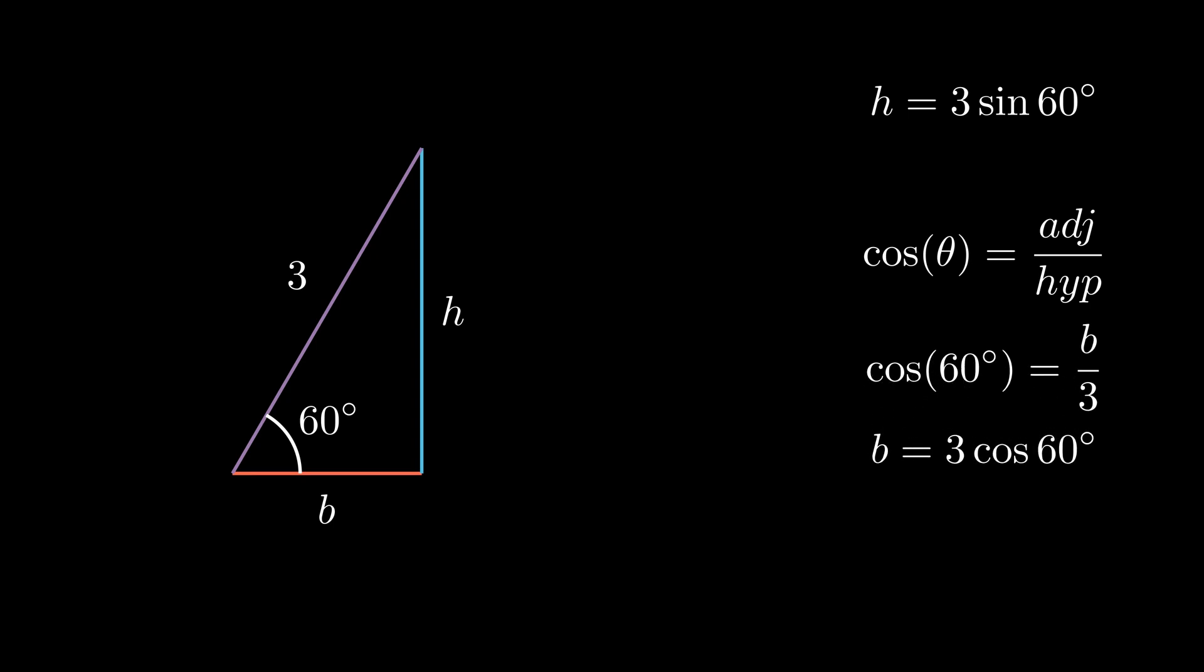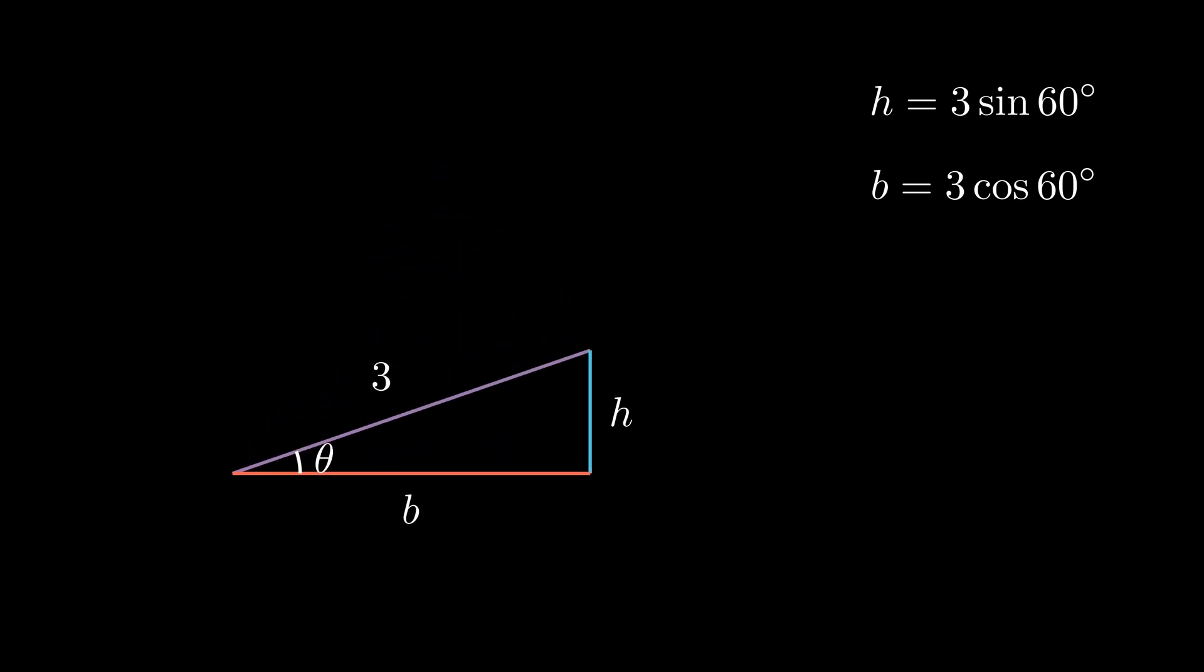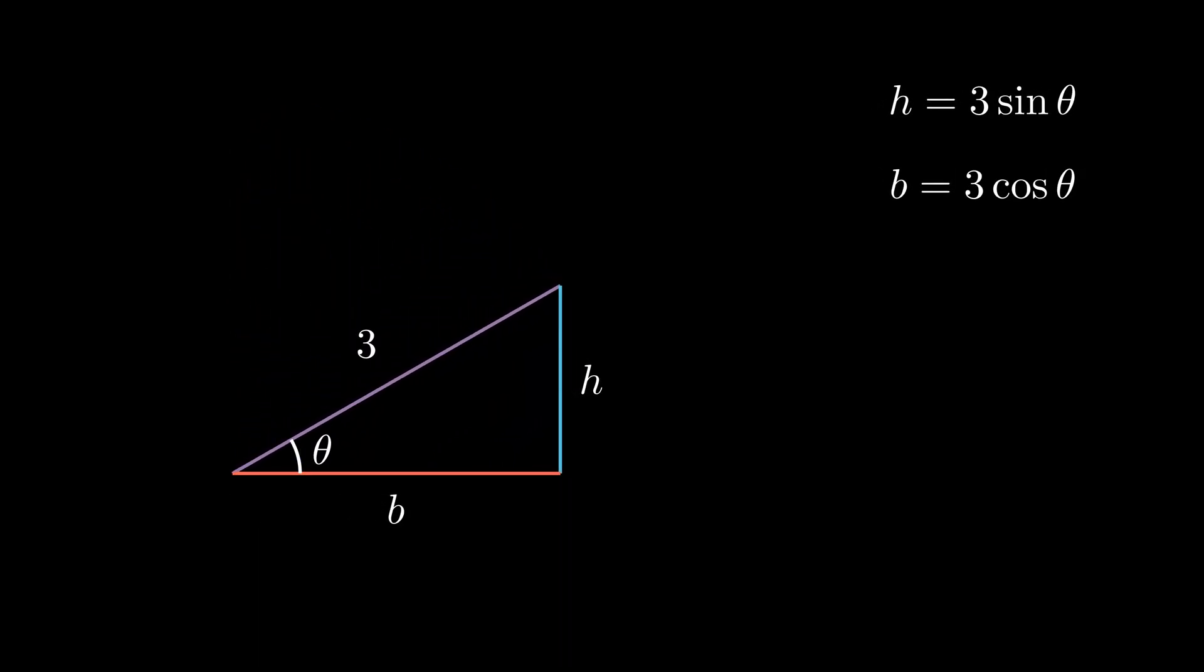More generally, you might look for what these side lengths amount to for any given θ value, and naturally we find that b = 3 cos θ and h = 3 sin θ. These answers are just our radius 3 times our trig functions of θ. And in fact, if you scale the hypotenuse down to 1, scaling the rest of the triangle with it, you'll find that these side lengths just become cos θ and sin θ.